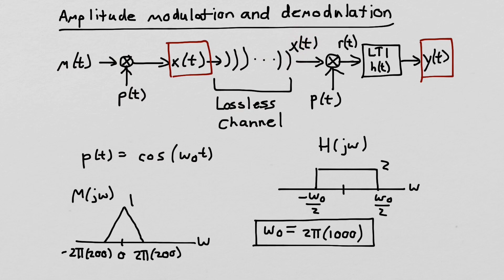So nothing happens to x of t as it propagates through the channel. We get it over at the receiver side, then multiply it by p of t again, and process it with an LTI system defined by impulse response h of t with a given frequency response, and the result will be y of t. The message signal has a triangular frequency response. The cosine frequency is omega-zero equal to 2π times 1000, and the filter has cutoff frequency of plus and minus half of omega-zero, with a scaling factor of 2.